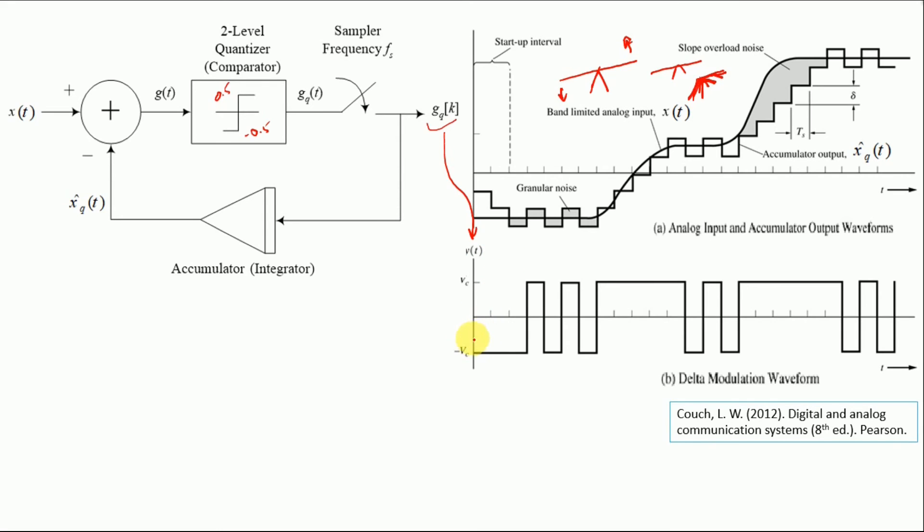So symbolically this is minus Vc. So if the accumulator is going down we have minus Vc. If it is toggling, so we would have plus Vc then minus Vc plus Vc and so on. So over here you can observe that it is consistently increasing so you would have plus Vc and then minus plus minus and so on.